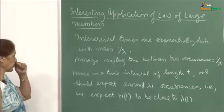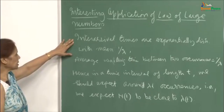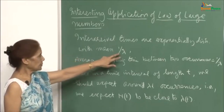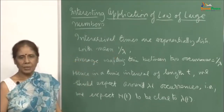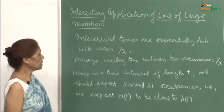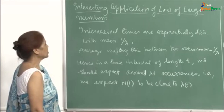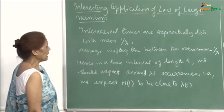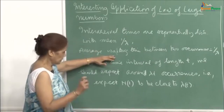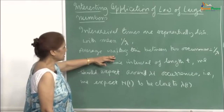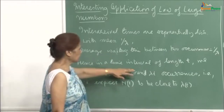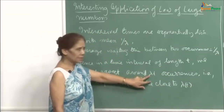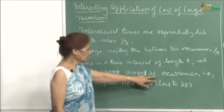Here you see inter-arrival times are exponentially distributed with mean 1/λ, because the arrival rate is λ. We have shown that the inter-arrival times will be exponentially distributed and the mean inter-arrival time would be 1/λ. That means the average waiting time between 2 occurrences is 1/λ, and so the mean arrival rate is λ. Hence, in a time interval of length t, we should expect around λt occurrences if λ is the mean arrival rate per unit time.